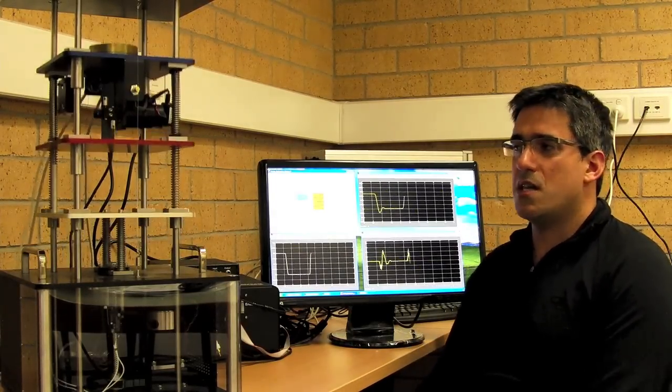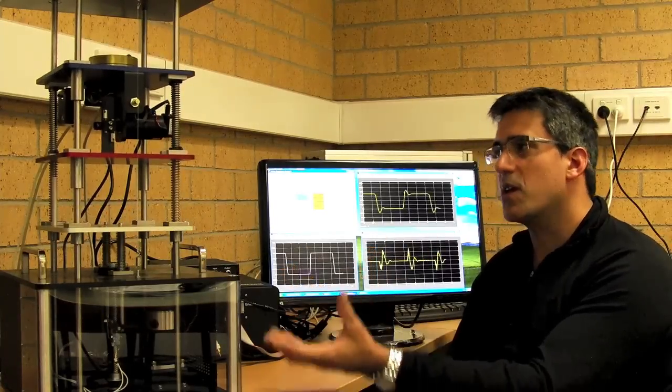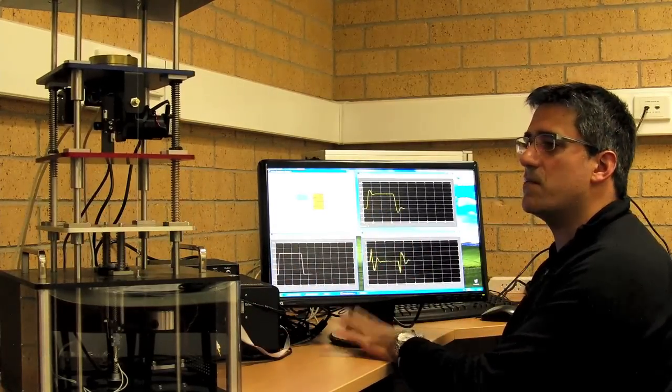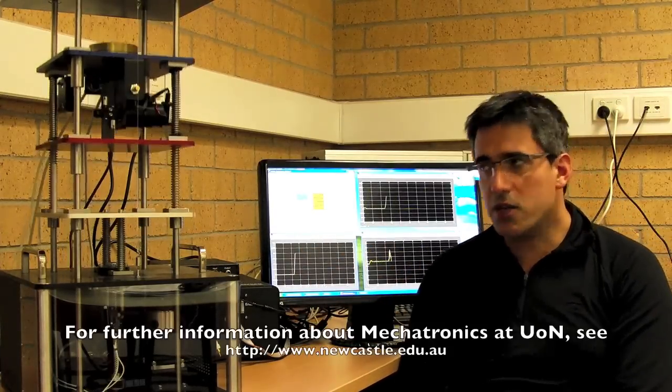So this is a typical example of mechatronic systems. We have a mechanical system with sensors and a computer system making decisions and providing commands to an actuator that modifies the behavior of the system.